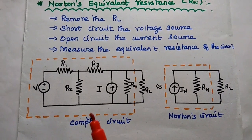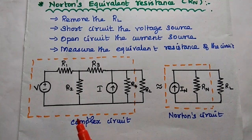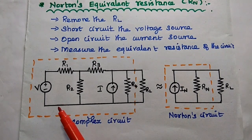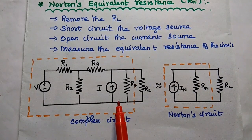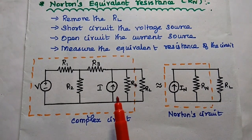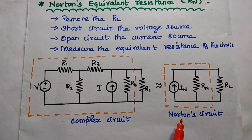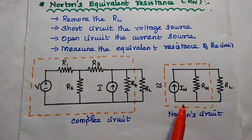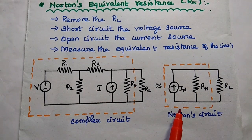We can consider this example. The circuit is a complex one with a voltage source, current source, and more number of resistance values. This can be simplified using Natan's equivalent circuit, which is the equivalent circuit for this complex network.